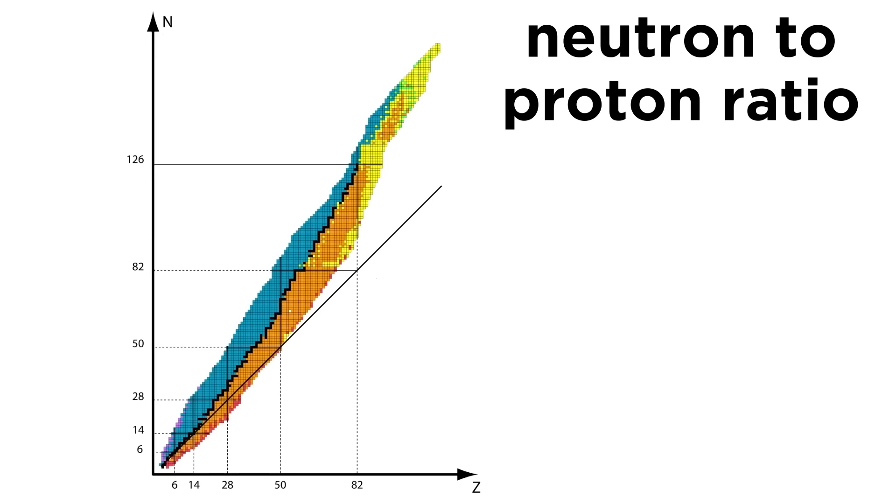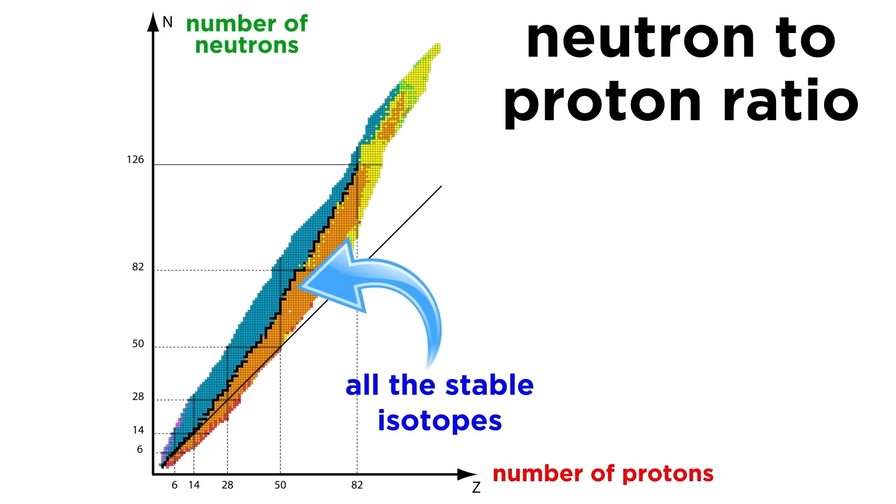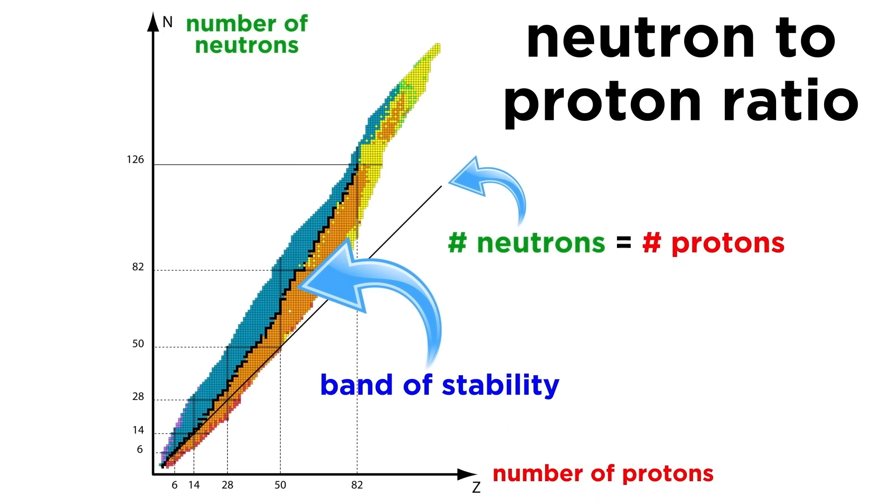The first thing we want to look at in order to answer this question is examine the neutron to proton ratio for all of the stable isotopes that we know of. That's what this chart shows, with the number of neutrons on the vertical axis, the number of protons on the horizontal axis, and every stable isotope we know, like carbon-12 or oxygen-16, is represented by a dot on the chart. If this black line with a slope of 1 represents a precise 1 to 1 ratio of neutrons to protons, then we will define this region here as the band of stability.